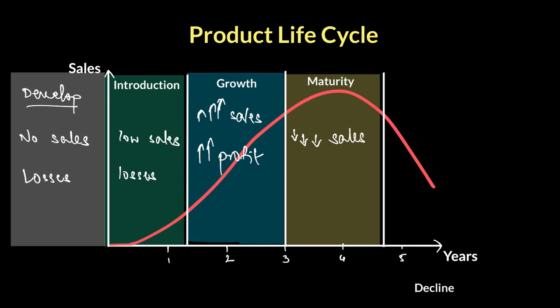Why might this be happening? Maybe your product is just too old and you haven't come up with new variants and new uses for it. Maybe your product was so good that big competitors entered the market, stole your thunder, became the market leader, and left you behind. Things aren't going your way, and you'll also see your profit go down from this particular product. This is your alarm bell situation, because after this, it's all downhill.